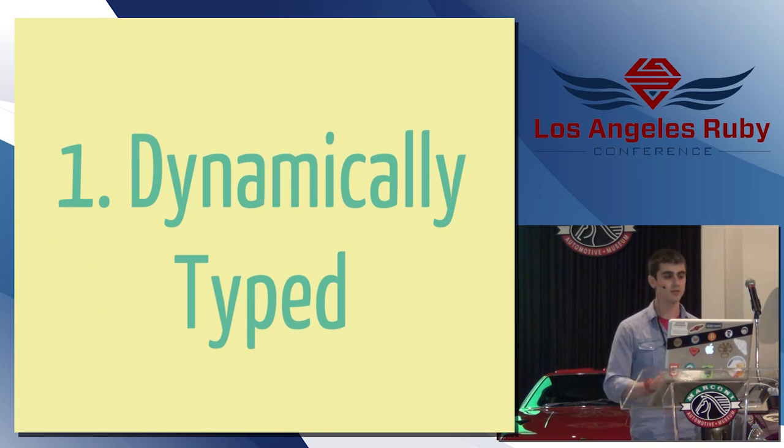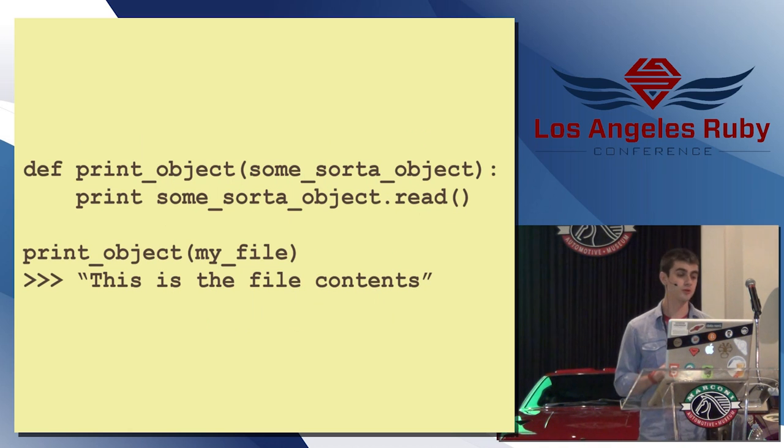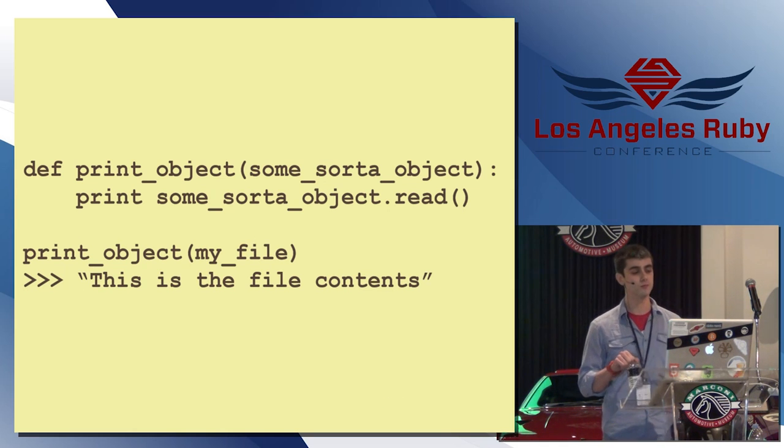Here's a quick Python example. I can just have a method function, print object, which takes some sort of object as a parameter. And as long as that object responds to a read method, it will work. So, if I pass in a file, I'll get back the file contents.